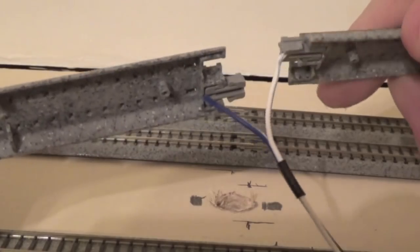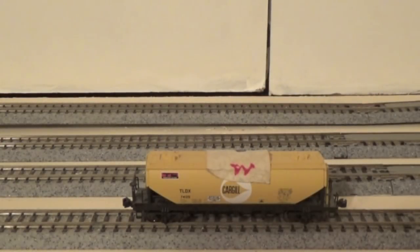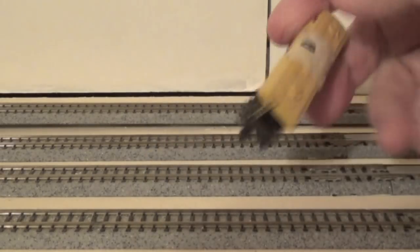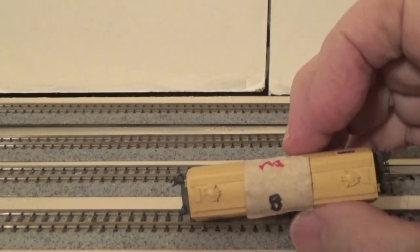This car helps me identify the white rail and the blue rail. I write W for white on one side of the car and B for blue on the other side. I can push this car around the layout as I'm installing the drop feeders to make sure I don't get them reversed.